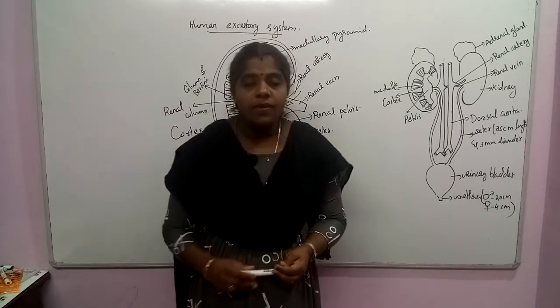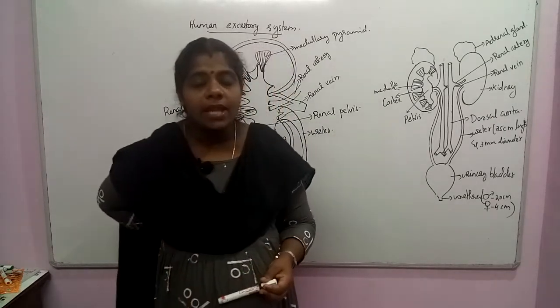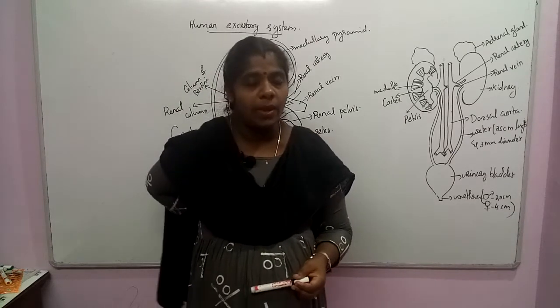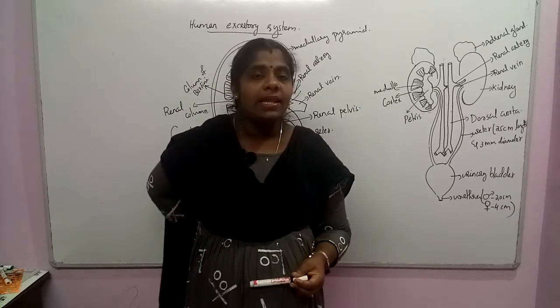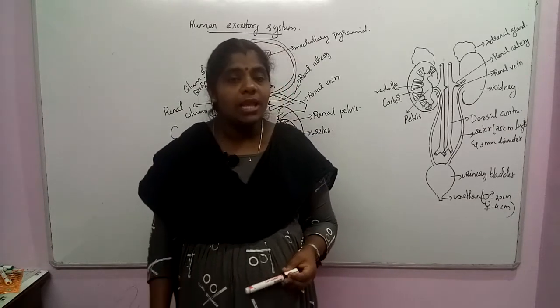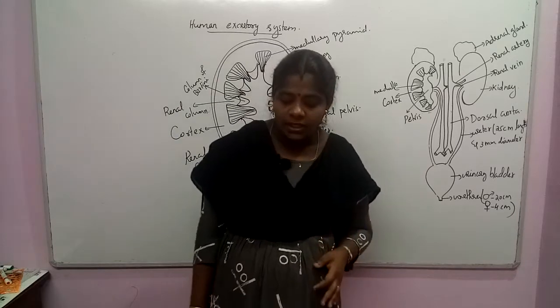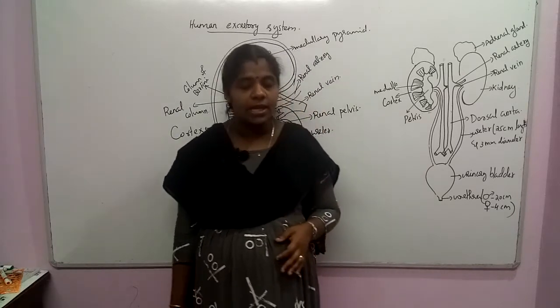The size of the kidney in a human: the length is 10 to 12 centimetres and the width is 5 to 7 centimetres.